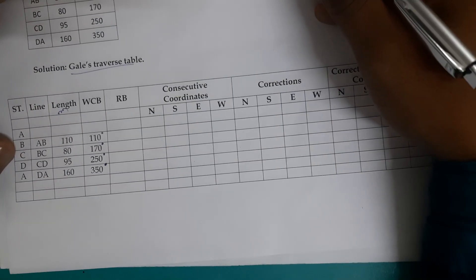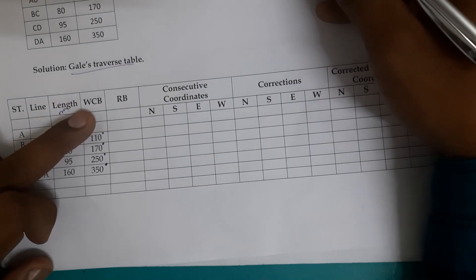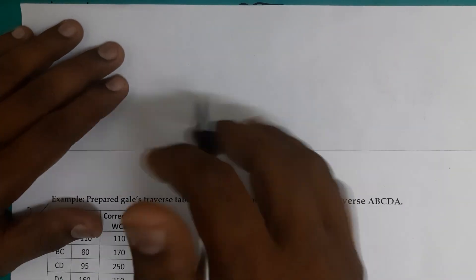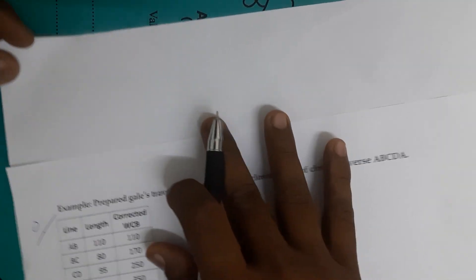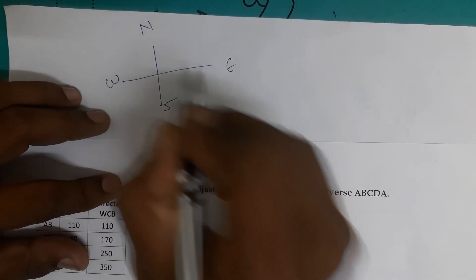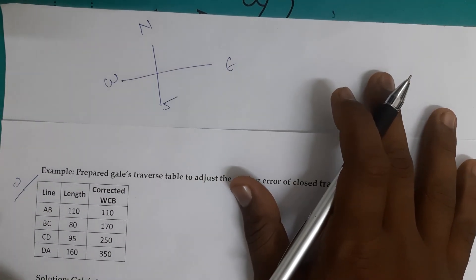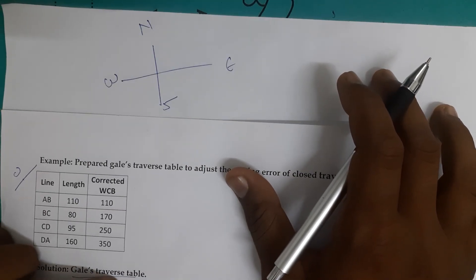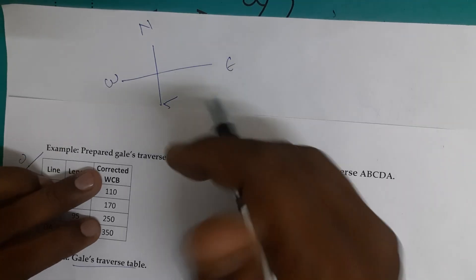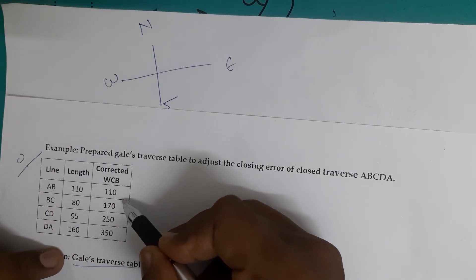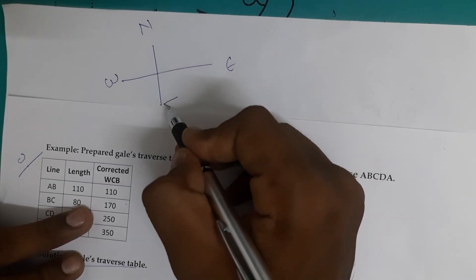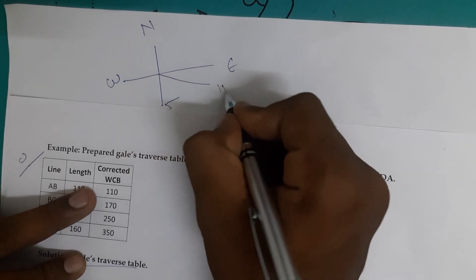The first step in the Gale's Traverse method is to convert the whole circle bearing into the reduced bearing. The four quadrants are North, South, East, and West. For the first angle, the WCB is 110°. Since 110° lies between 90° and 180°, it is in the second quadrant.